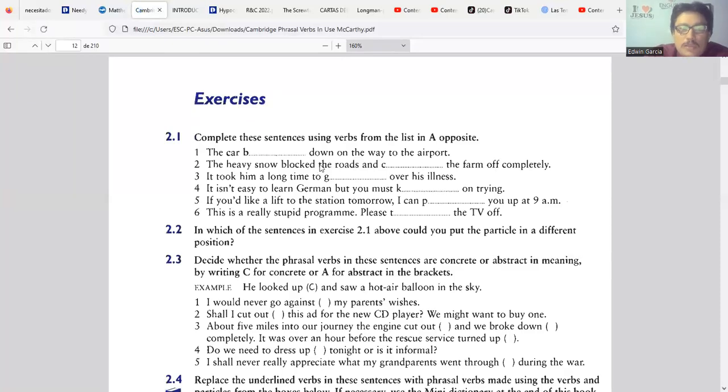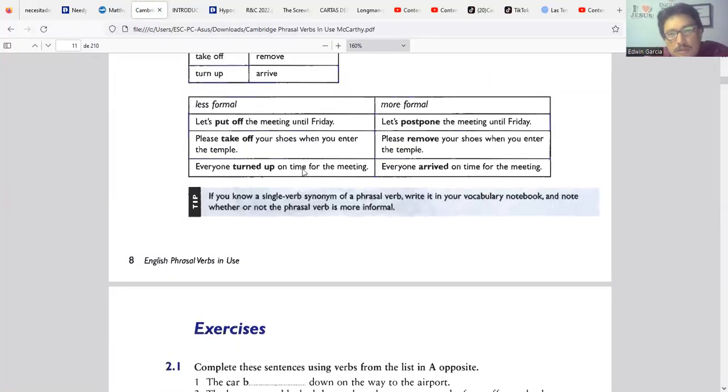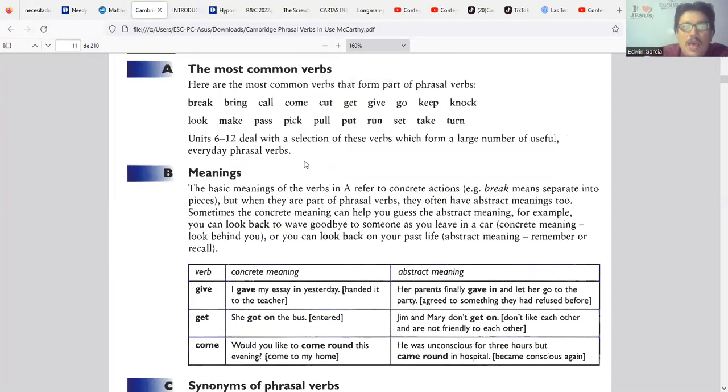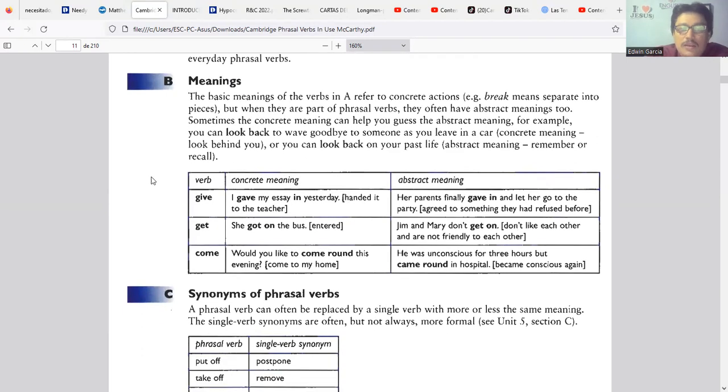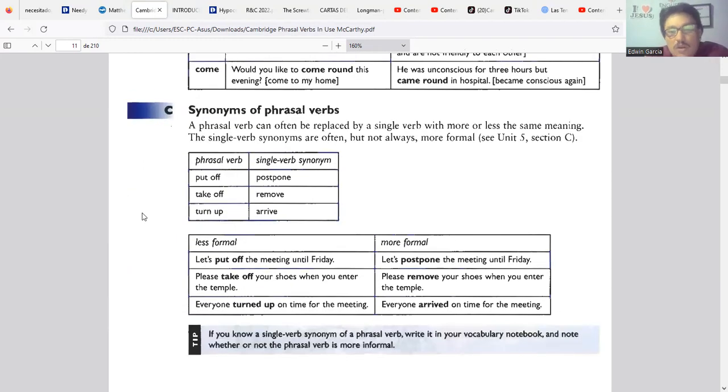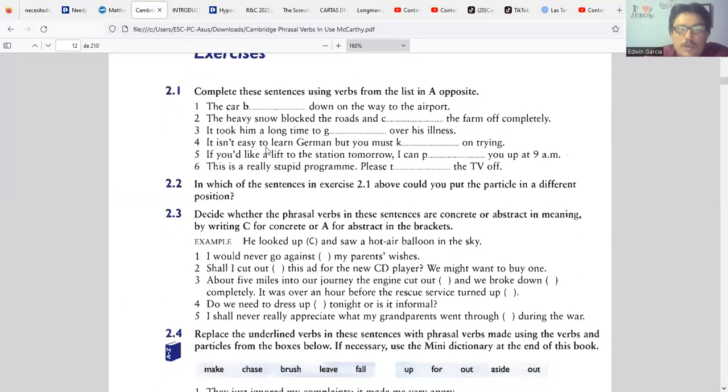Con eso terminamos y vamos ahora a trabajar con nuestro material de Cambridge. Nos habíamos quedado acá en la explicación, vamos a retomar un poquito para ir a los ejercicios. Habíamos dicho que hay muchos common verbs, habíamos dado que podíamos tener concrete meaning y abstract meaning, cuestiones en donde se aplican las frases verbales a cosas físicas o reales que podemos ver y tocar, y los abstract que son cosas que no podemos ni ver ni tocar pero que sabemos que existen, más en un sentido figurado. Luego habíamos visto algunos sinónimos que pueden existir entre algunas frases verbales.